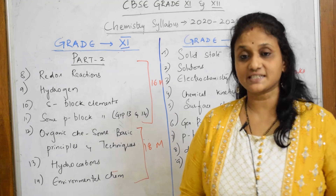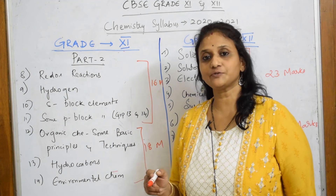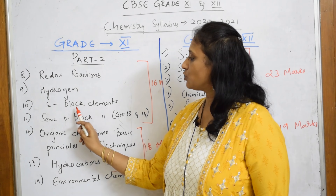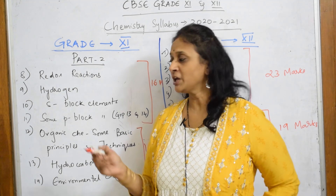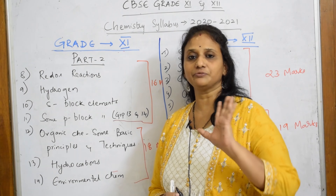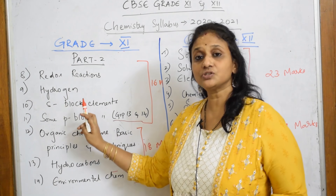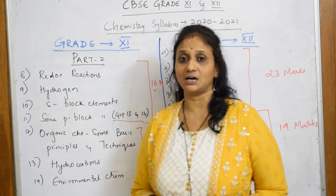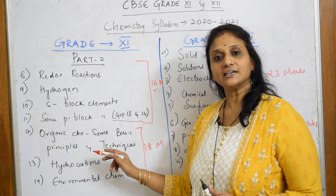Now let us cover Part 2 of your NCERT for grade 11 CBSE syllabus 2020-21. In the Part 2 book, the chapters are: Redox Reactions, Hydrogen, S-Block Elements, and Some P-Block Elements. In 2020-21, P-Block covers group 13 and 14 only — group 15 is not included in grade 11. Redox Reactions, Hydrogen, S-Block, and Some P-Block Elements together come up to 16 marks.